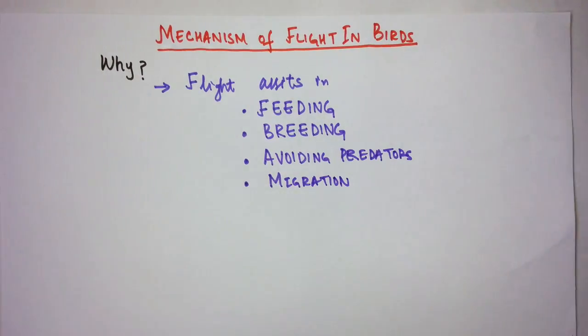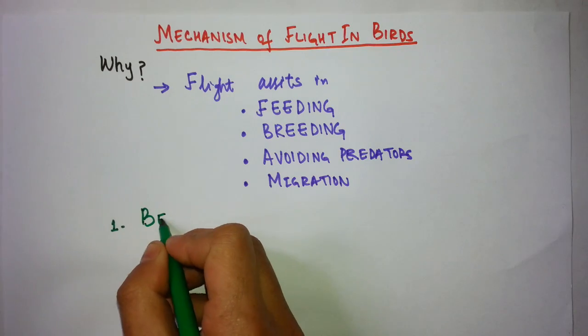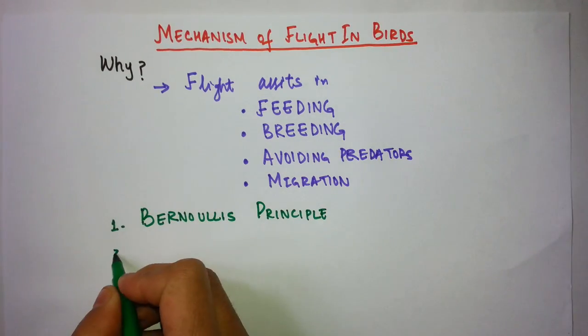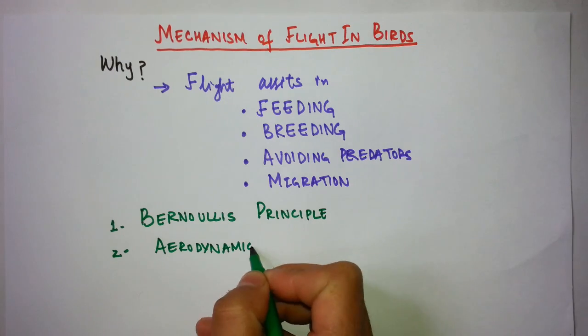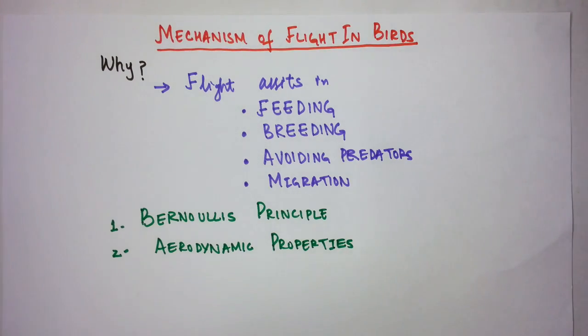Now getting to our point, the mechanism of flight in birds is based on two main points: Bernoulli's principle and aerodynamic properties. We will discuss these one by one. First, we will discuss Bernoulli's theorem.